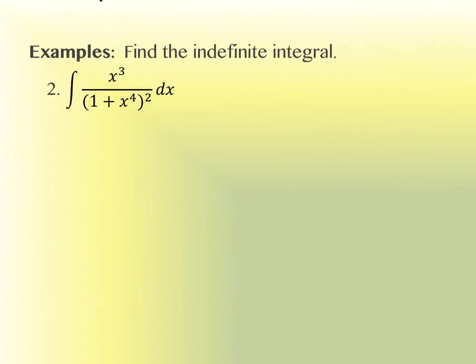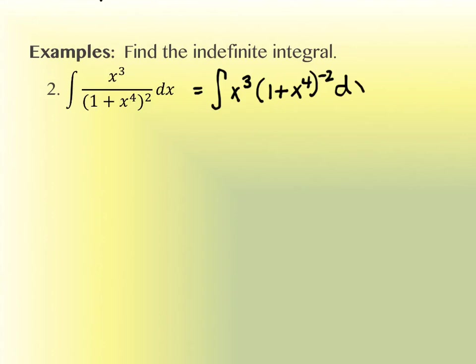Let's take a look at another one. This one doesn't look like a product — it looks like a quotient. If it helps you, you could rewrite it so that it looks like a product. Either way, you still have the same value for u. What looks like it's inside of something else? 1 plus x to the 4th — that is what looks like it's inside of something else, so that's my u value.